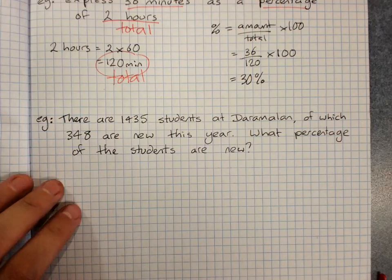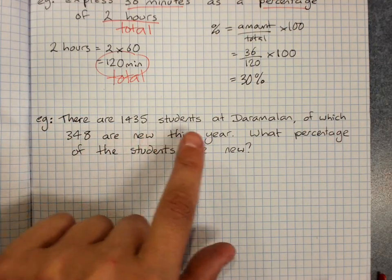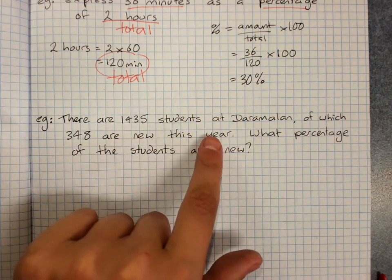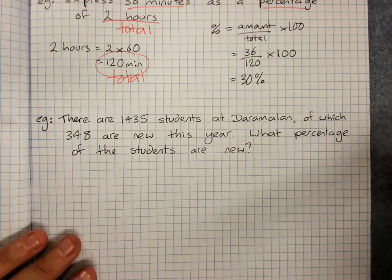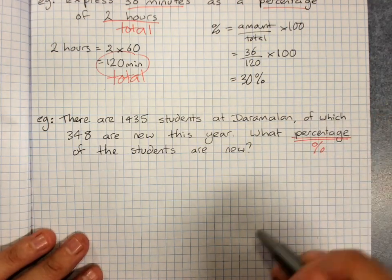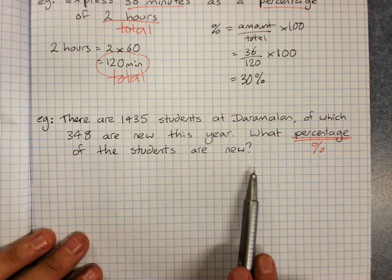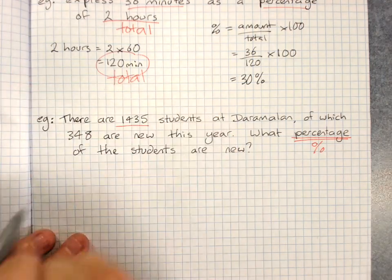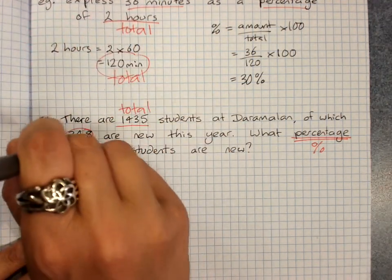Another example, a word example this time: there are 1435 students at Daramalan, of which 348 are new this year. What percentage of the students are new? So you can see it's a find-the-percentage question because they said what percentage. They didn't give you a percent, there's no percent sign in there. They want you to find a percentage. They've told you the total and they've told you the amount.